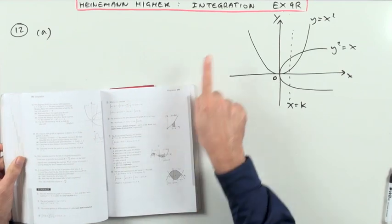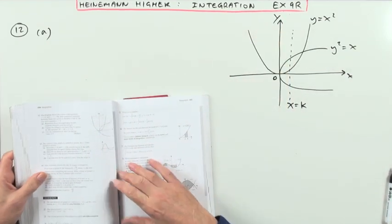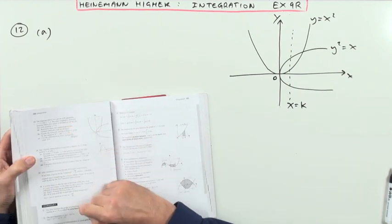Heinemann Higher, chapter 9 on integration, the mixed questions exercise 9R at the end. Number 12, a hard question, lengthiest one.